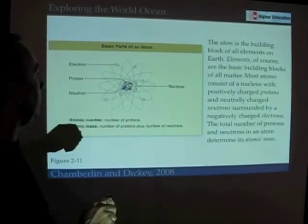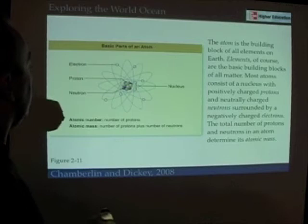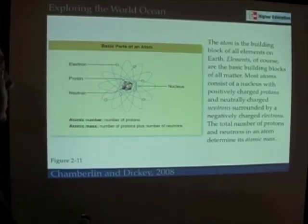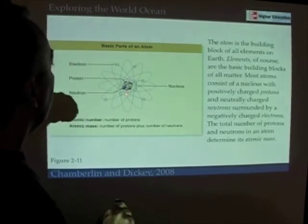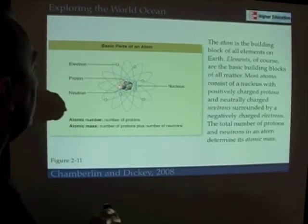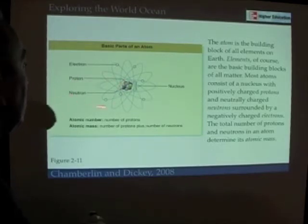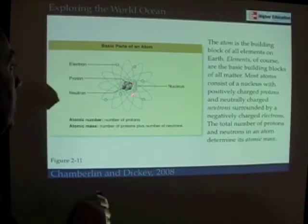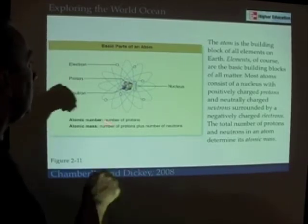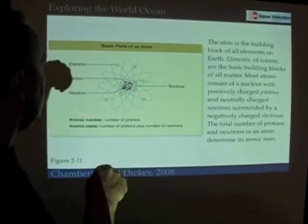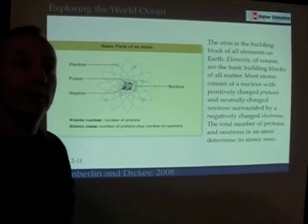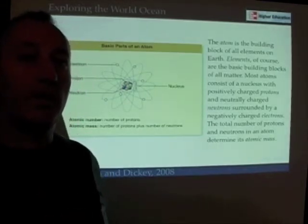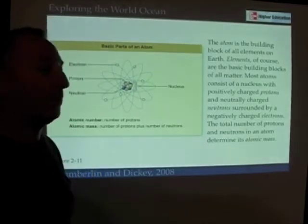To understand radiometric dating, we have to understand a little bit about the atom. The basic atom consists of a nucleus — the center part — surrounded by electrons. In many ways, an atom kind of looks like a solar system. The nucleus is made up of positively charged particles called protons and neutrally charged particles called neutrons. The number of protons and neutrons in the nucleus is important, as we'll see in a few minutes. Electrons are negatively charged and orbit the nucleus in a complex way. It's the number of electrons and their properties that give certain elements their chemical properties, a subject we'll take up in Chapter 6.